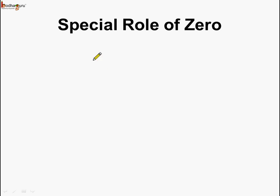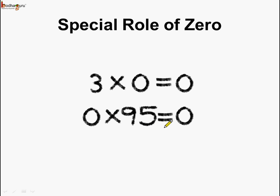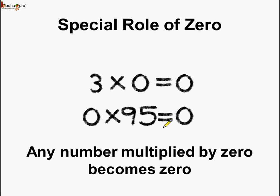Now let us look at the special role of 0. Multiply any number by 0 and what do we get? 3 multiplied by 0 is equal to 0. Even if we take a bigger number, when 0 is multiplied to it the answer is again 0. So 0 multiplied by 95 is also equal to 0. Any number multiplied by 0 becomes 0 — the product is always 0 when we multiply any number by 0.